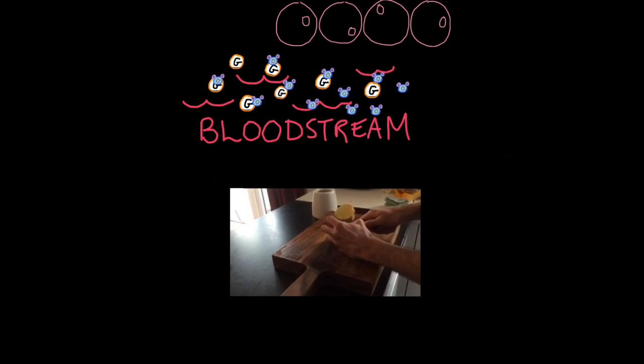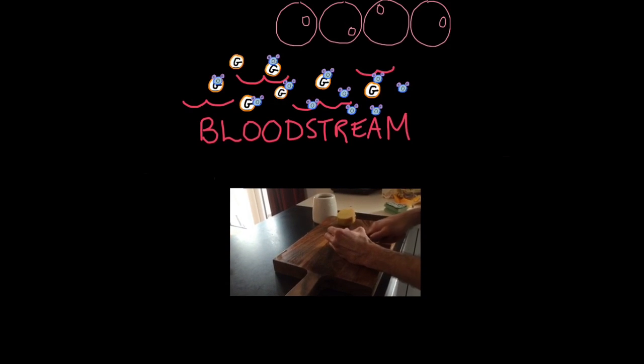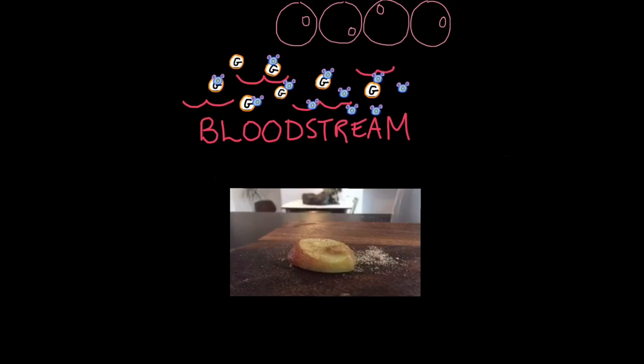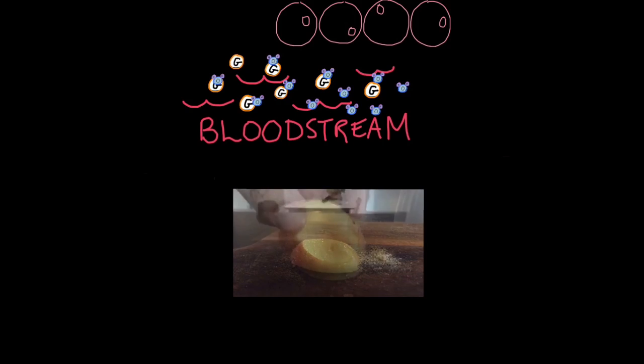Here I'm cutting an apple. The apple will represent our body cells. Now, the sugar I'm putting on top will represent the glucose that's entered our bloodstream. Now, using time-lapse camera, look what happens. You can see water starts to leave the apple to dilute the sugar. And there you have it. Look at all that water come out.